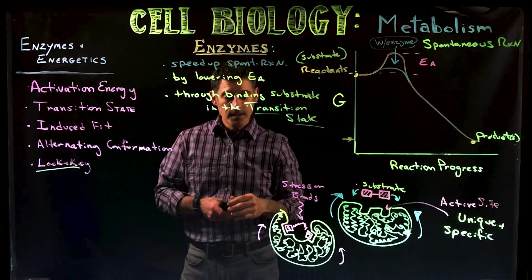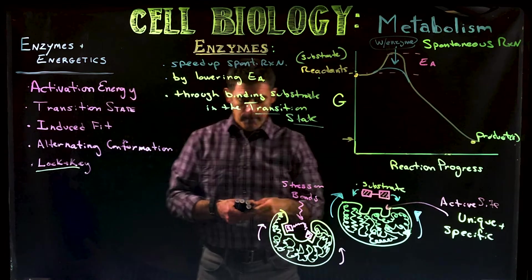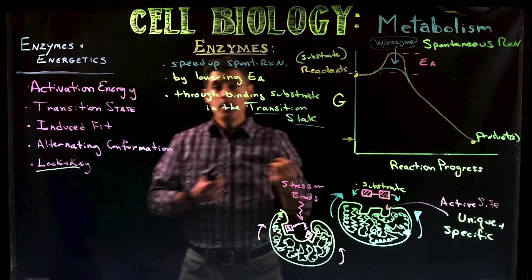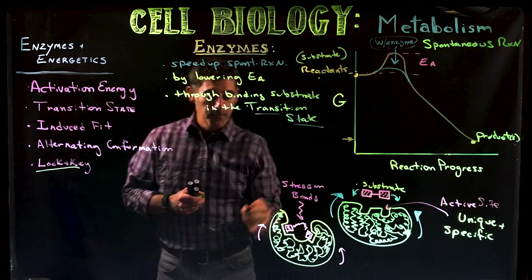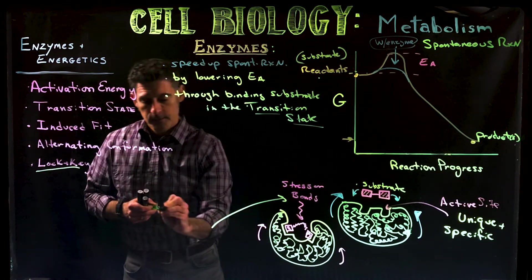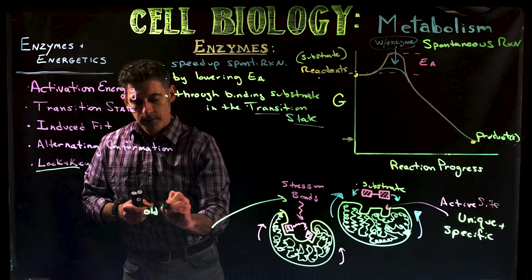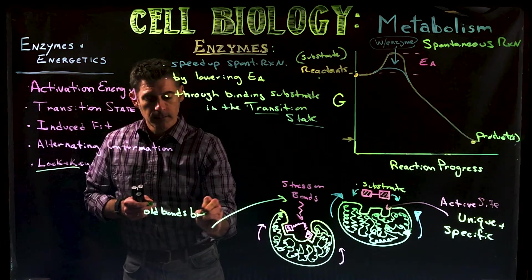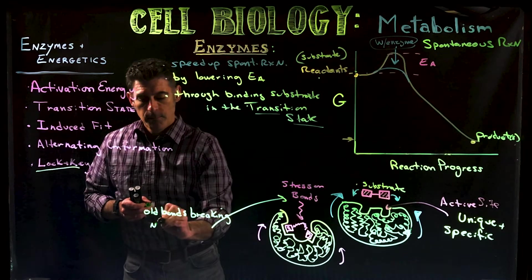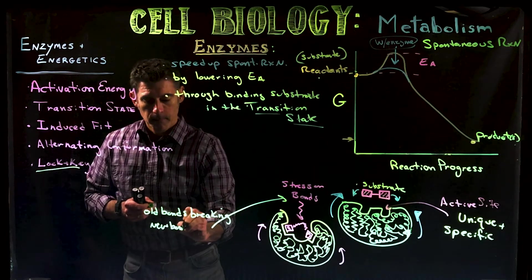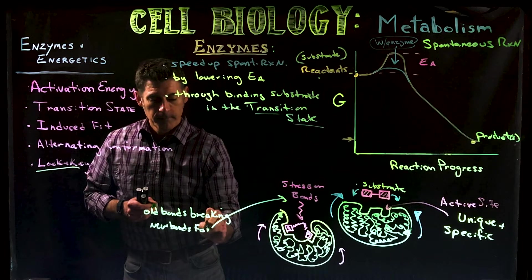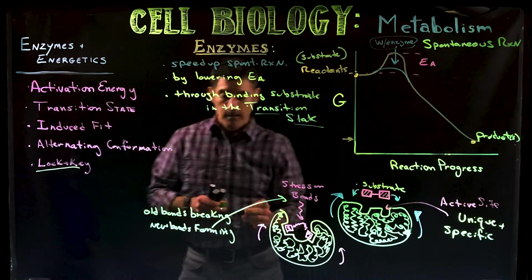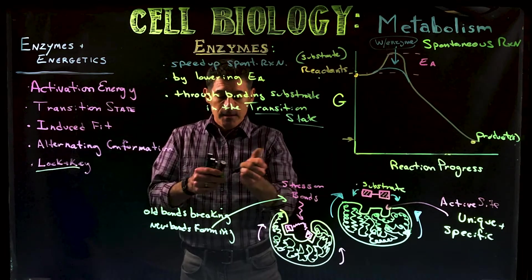So enzymes lower the activation energy through binding substrate in what we call the transition state. So what's the transition state? This is the point where old bonds are breaking, they haven't broken, and new bonds are forming, but they haven't formed yet. So old bonds breaking, new bonds forming. That's the transition. It's something in between.